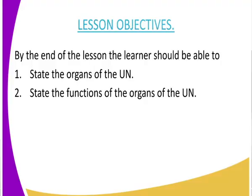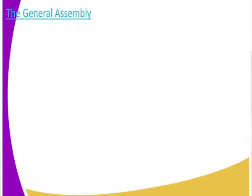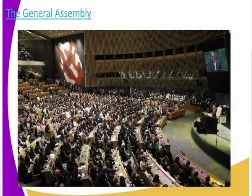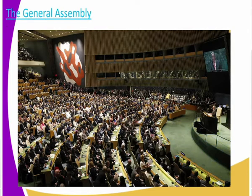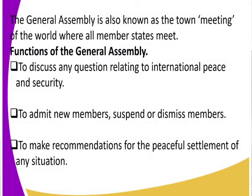The first organ of the United Nations is the General Assembly. An assembly is a meeting of people, and the General Assembly is a meeting of all the member states. We must also note that the General Assembly is also known as the town meeting of the world, where all the member states get to meet.